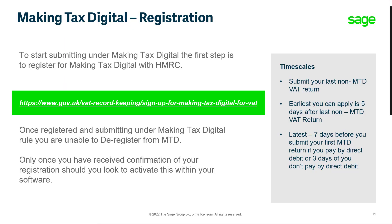In order to submit to HMRC under Making Tax Digital, you first need to register for MTD with HMRC. It is important that you complete this registration at the correct time to ensure you're registered in time for your compulsory submissions and to ensure payments are successful and you don't end up paying twice. First, complete your final non-Making Tax Digital VAT return, then wait at least five days before registering, but don't leave it until you have less than seven days left for your next return. Once you're registered for Making Tax Digital, you won't be able to de-register from the service. Finally, once you've received email confirmation that registration has been successful, you need to activate this within your software.